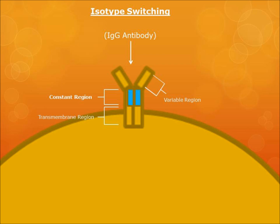In this example, the antibodies are switched from IgM to IgG. This is because IgG antibodies are more effective at dealing with extracellular pathogens, such as the pathogens shown at the beginning of this video. As the B cell continues to produce antibodies, the quality of the antibodies also improves through somatic hypermutation.